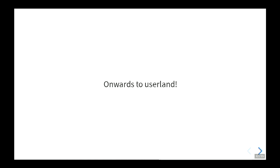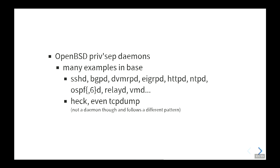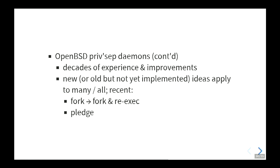Let's look at user land. Why is it better to do this in user land? In OpenBSD, we have a huge body of experience running privilege-separated daemons — literally for decades. Examples include SSHD as the first one, many routing daemons, our web stack, NDPD, and even a TCP daemon running with an unprivileged user. Another benefit is that they all follow the same pattern, so when we implement something new or decide to implement an old idea, it basically applies to all the things.